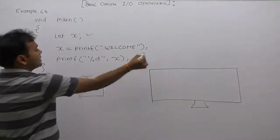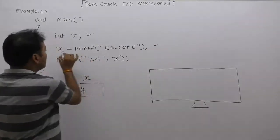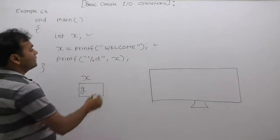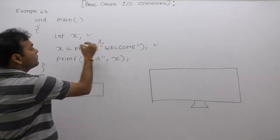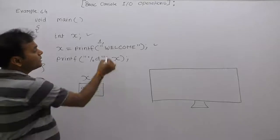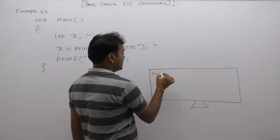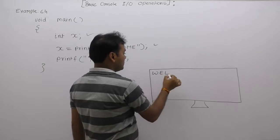In the next statement, we are writing x equals to printf welcome message. As you know, the working of printf, the first step of printf is it will print the given message on the monitor. According to this printf message, it will print WELCOME on the monitor.